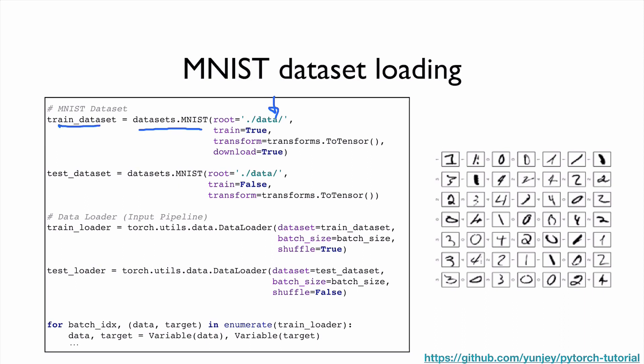And then once we have this dataset, we feed this one to the data loader here. And then we can decide what will be the batch size that you want to use, and do you want to shuffle. And then once we have this data train loader, we can just use them inside of the loop. So each iteration, basically we can get the one batch size data and target, and then we can use them in our training cycle.